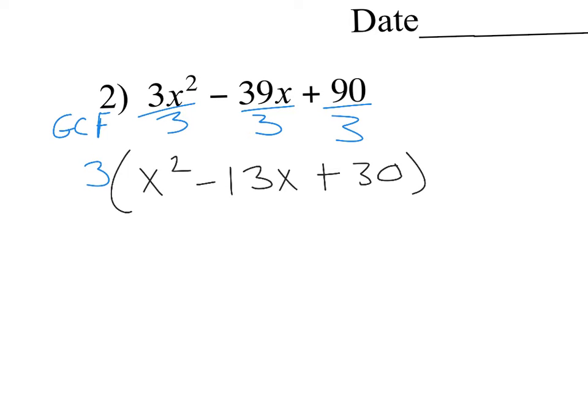Now we check if it's special. x squared is a perfect square since x times x gives x squared, but there's no number you can multiply by itself to get 30 — 15 times 15 doesn't work — so it's not special. Next question: is it a quadratic trinomial? Yes — that first term has an exponent of two and we have three terms.